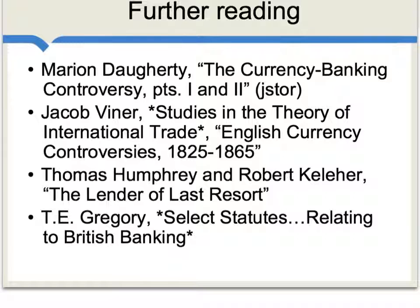This is a complex topic, but there are some very good readings available. If you have access to JSTOR, there's a very good two-part piece by Marion Daugherty called 'The Currency Banking Controversy.' Maybe the best single source is Jacob Viner — from his free and online book Studies in the Theory of International Trade, read the chapter on English Currency Controversies, 1825–1865. Online, there's a good piece by Humphrey and Kelleher about Peel's Act of 1844 and how it connects to the idea of a lender of last resort. There's also a volume by T.E. Gregory collecting key documents and pamphlets relating to British banking. The overall lesson here is that tight money versus easy money positions have a very long history in monetary debates.